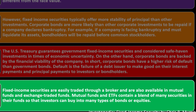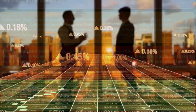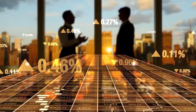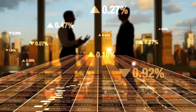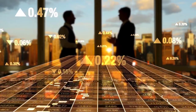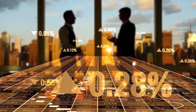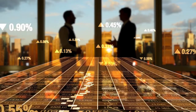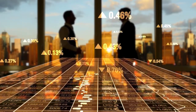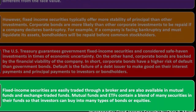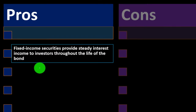Fixed income securities are easily traded through a broker and are also available in mutual funds and exchange-traded funds. Many common investors investing for retirement through an IRA or 401(k) get exposure using mutual funds. Mutual funds and ETFs contain a blend of many securities so investors can buy into many types of bonds or equities.